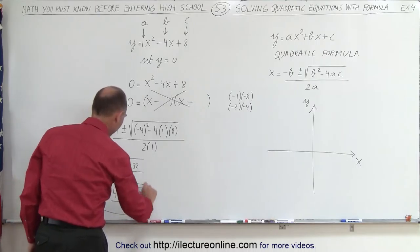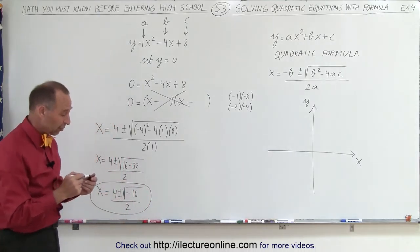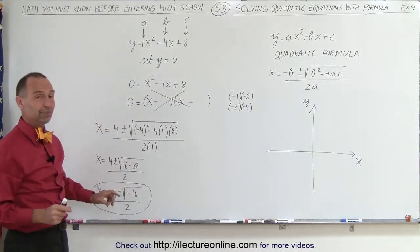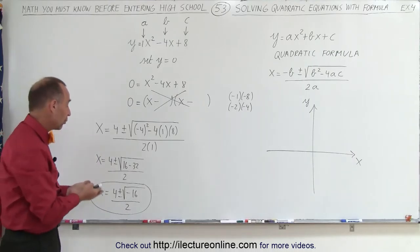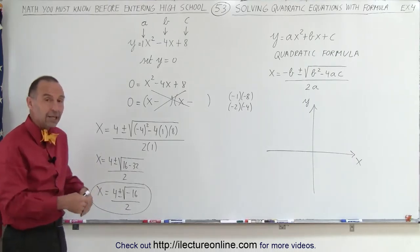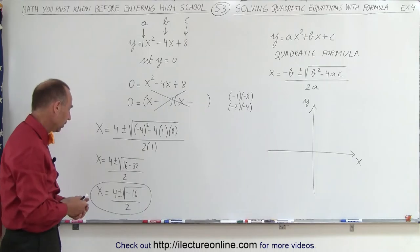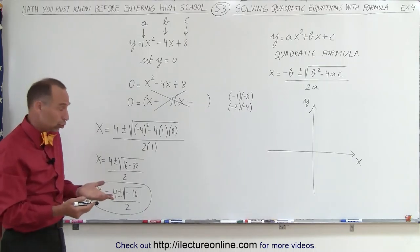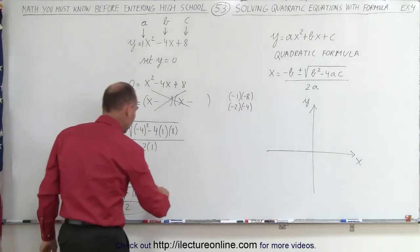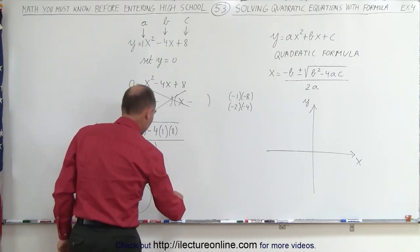Now here we have a problem. We're supposed to take the square root of a negative number. There is no such thing as the square root of a negative number. That would be an imaginary number, not a real number. So therefore, there's no solution to this particular quadratic equation.